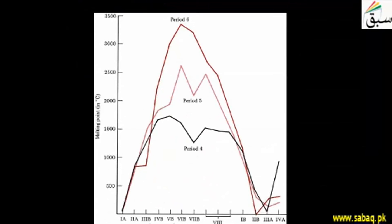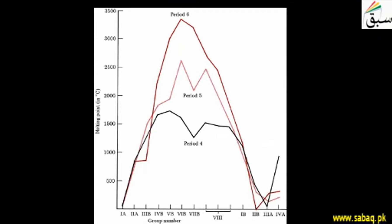For period 6, the melting and boiling point trend is also shown. Since we have discussed period 4 and period 6, we can compare the trends across these series.